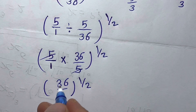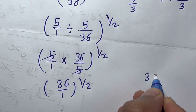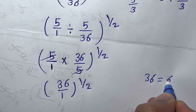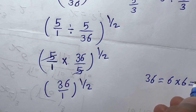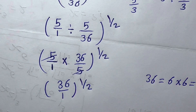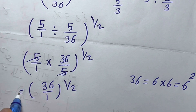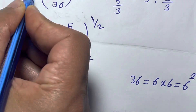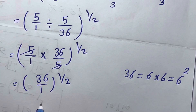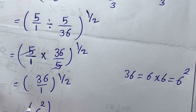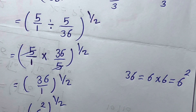Now we simplify 36. We can write 36 as six times six, which is six squared — that is, six to the power of two. So the expression becomes six to the power of two, raised to the power of one over two.